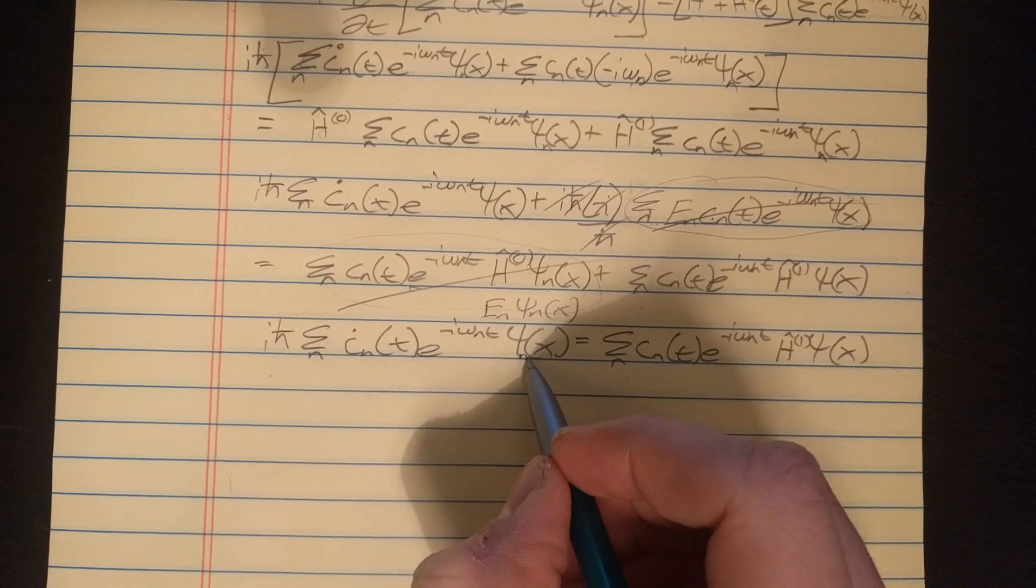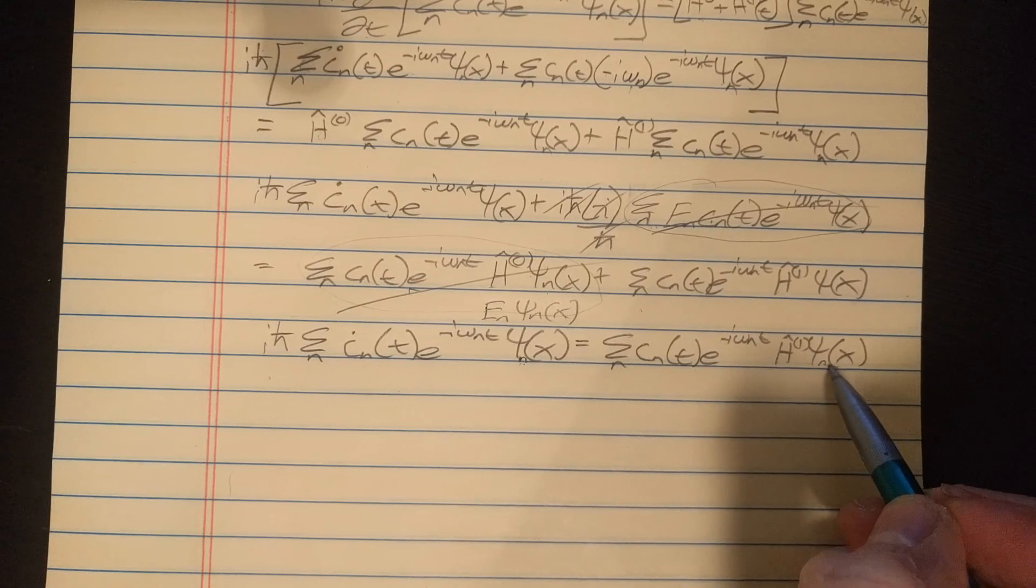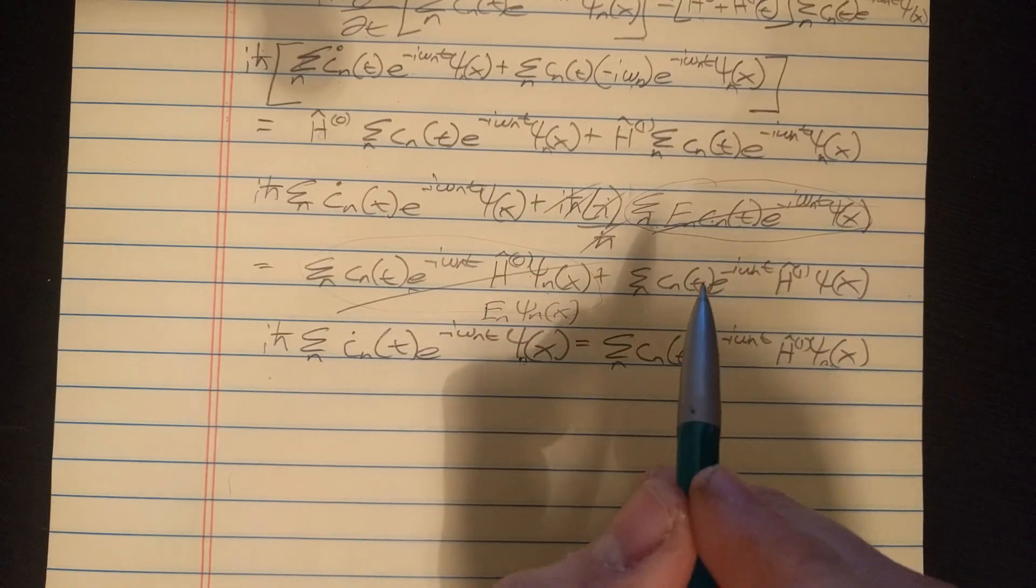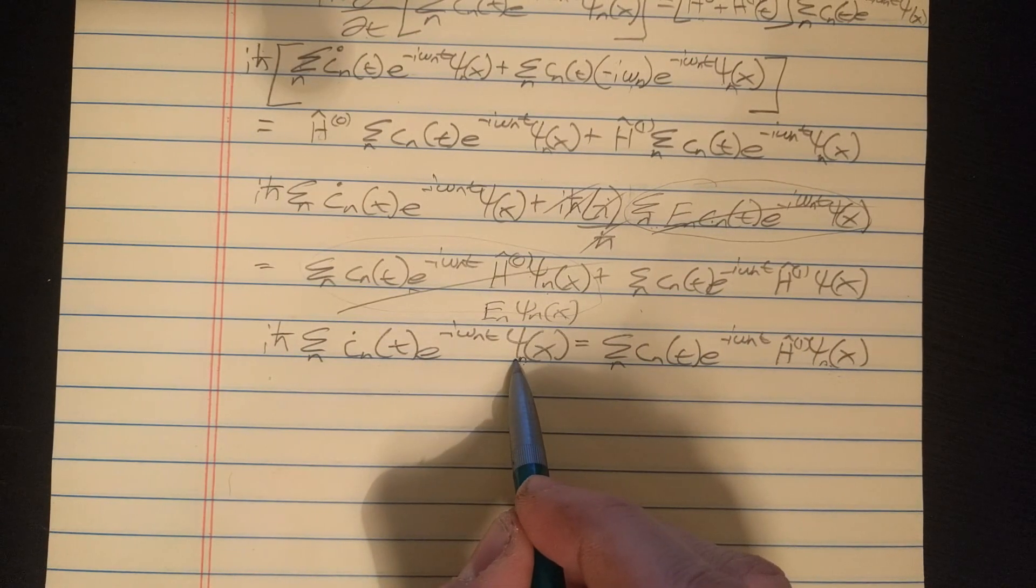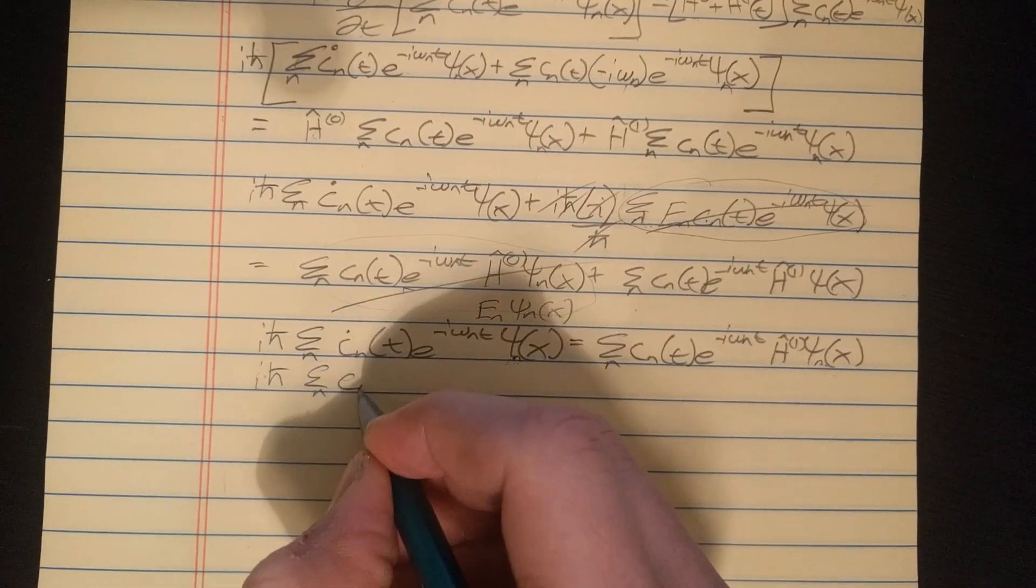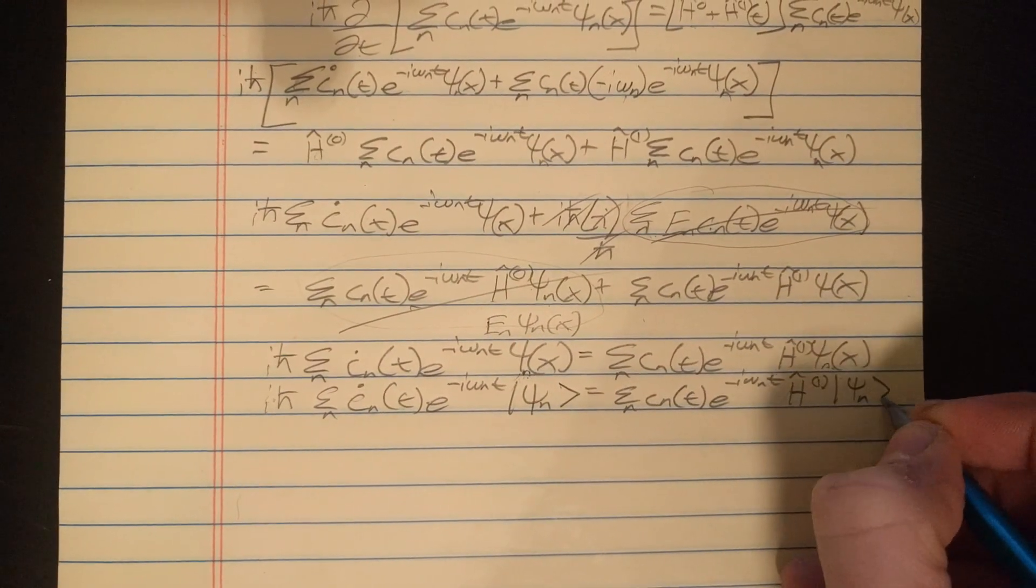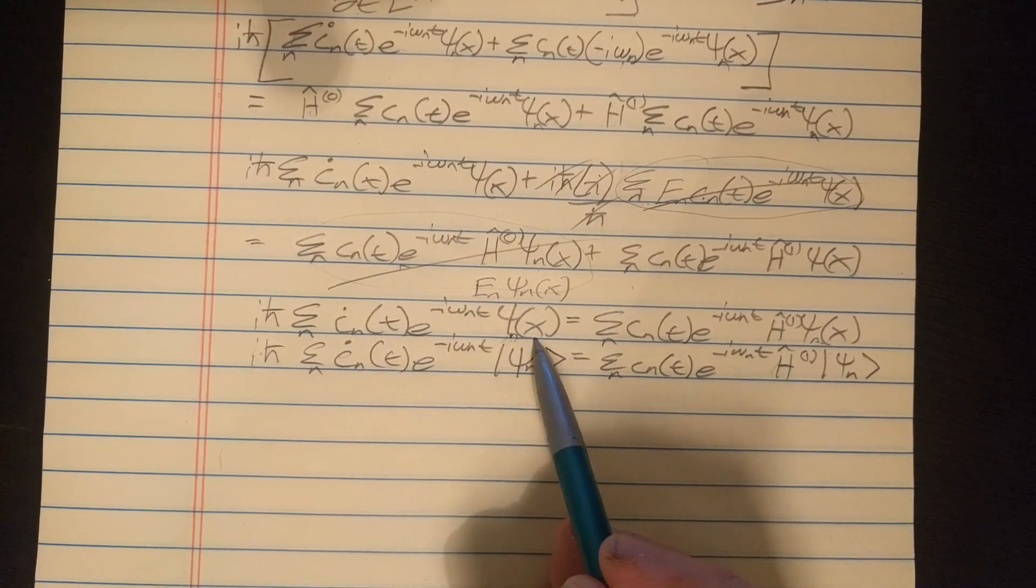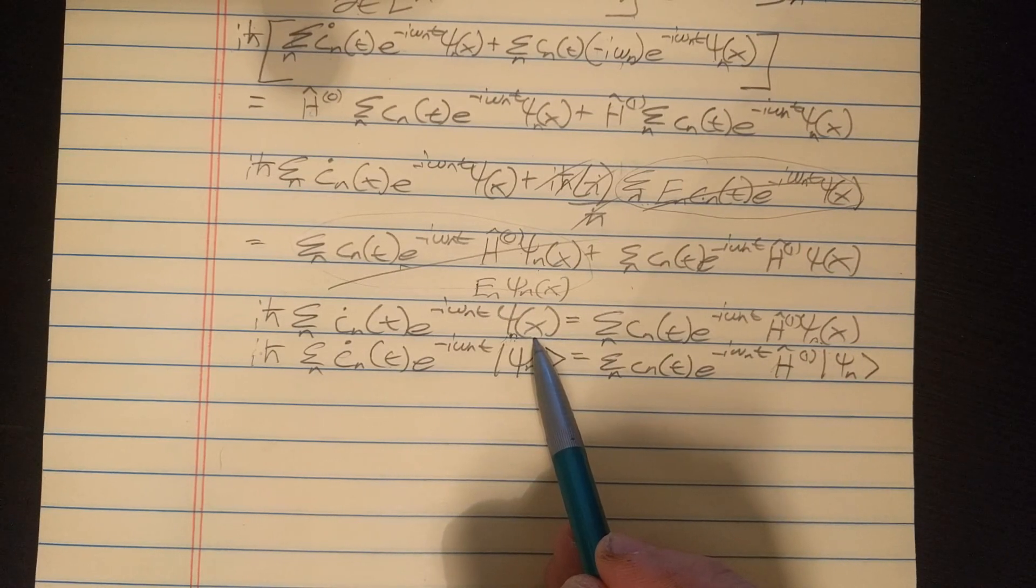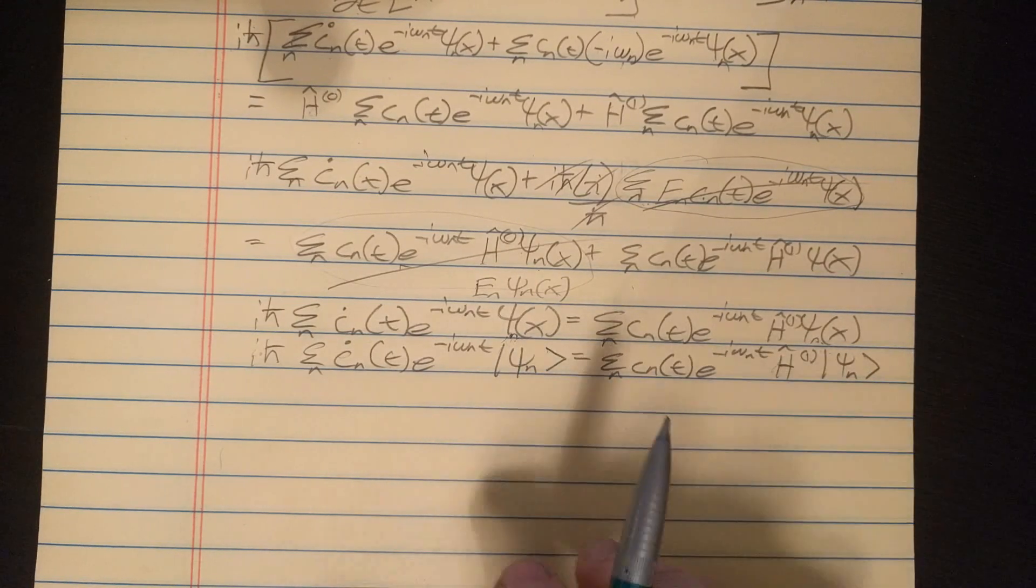And on the other side here, I put the H's inside of the sum because you can distribute these into a sum. And right here we've got H0 psi and I can rewrite that as E sub n of psi n x. And let's compare this term with this term here, and we see they're the exact same. So I subtract this one from this side and subtract this, and then they cancel. So we can rewrite our equation now like this. Now things are looking a little bit simpler.